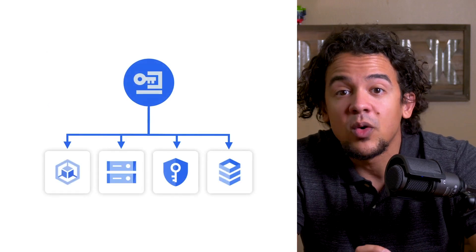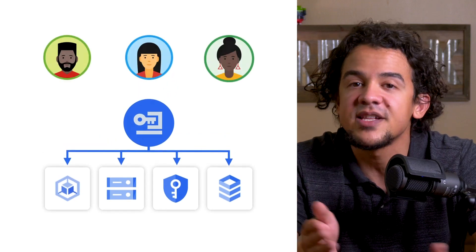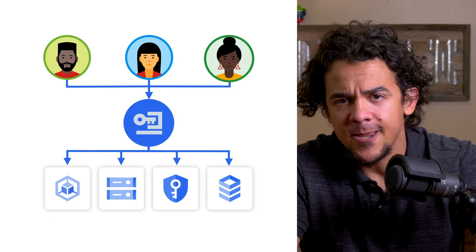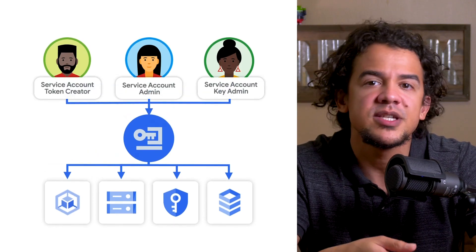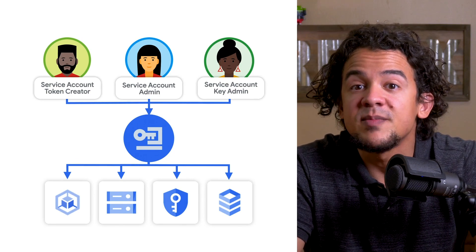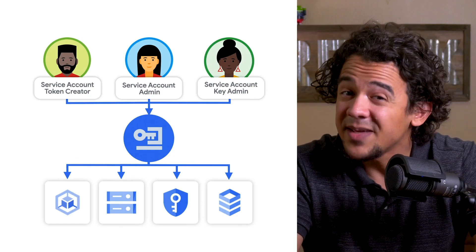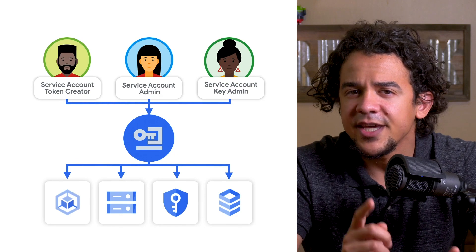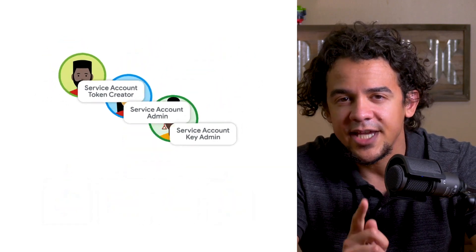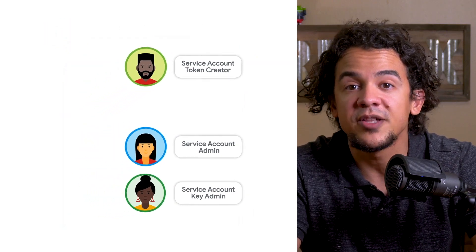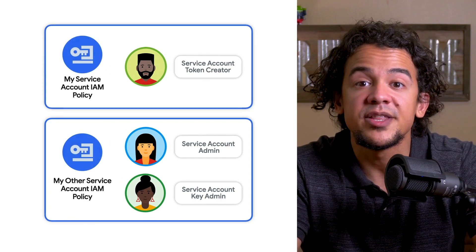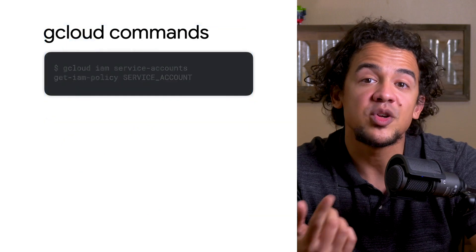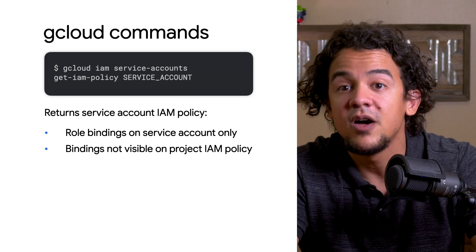Service account management doesn't only mean understanding what resources service accounts have access to, but also who has access to your service accounts. When you're taking a look at your IAM policy, take note of any accounts that have roles associated with managing or using service accounts. This includes predefined roles like Service Account Token Creator, Service Account Admin, and Service Account Key Admin. Some of these roles will allow users to make changes to or even act as service accounts, meaning it's technically possible for a restricted user to gain unrestricted permissions via a service account with bloated access — a security topic we'll cover in a later episode. In addition to the IAM policy on your project, there is also an IAM policy for each service account in your project. The role bindings on these policies are limited specifically to their corresponding service account and are not visible on the project's IAM policy. You can retrieve a particular service account's IAM policy with gcloud iam service-accounts get-iam-policy, followed by the account email.